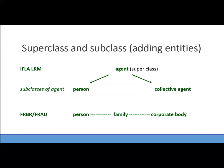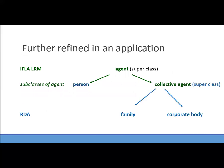In FRBR and FRAD we had a flat structure of person, family, and corporate body — three entities all at the same level. IFLA LRM introduces the hierarchy of agent as the superclass, subdivided into two subclasses: person and collective agent. Since IFLA LRM is a high-level model, any entity can be further refined by an application. RDA maintains person, family, and corporate body, but adds the superclass-subclass structure, introducing the superclass agent subdivided into person and collective agent, then takes collective agent and makes it a superclass of family and corporate body — thus remaining in alignment with LRM.